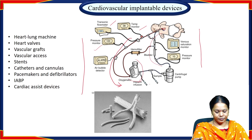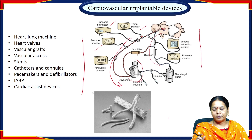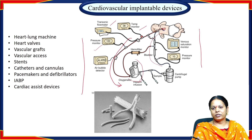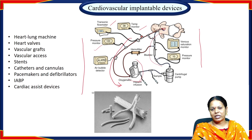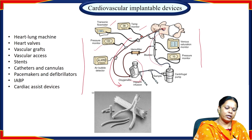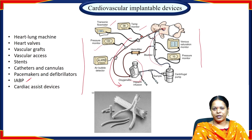Coming to vascular grafts: because of thrombus, blood vessels become occluded and restrict blood flow, causing tissue deprivation of nutrients and blood supply. If the clot is very thickened and cannot be removed by IABP, we perform an anastomosis — cutting out the blocked part of the blood vessel and replacing it with an artificial blood vessel called a vessel graft.